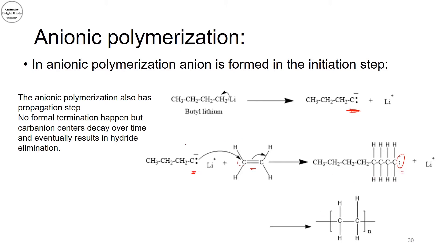This will continue in the propagation step. For the termination step, there is no formal termination step in anionic polymerization. If all monomers are used up, that is when termination effectively occurs, because the carbon anion will decay over time and eventually a beta-hydride elimination would happen in the presence of any impurities such as water or trace alcohols. This is when polymer termination happens.